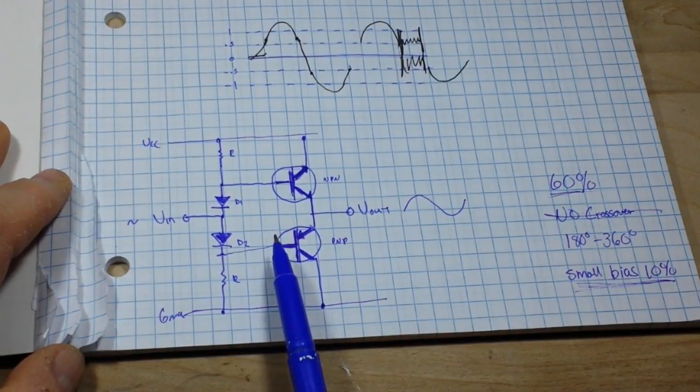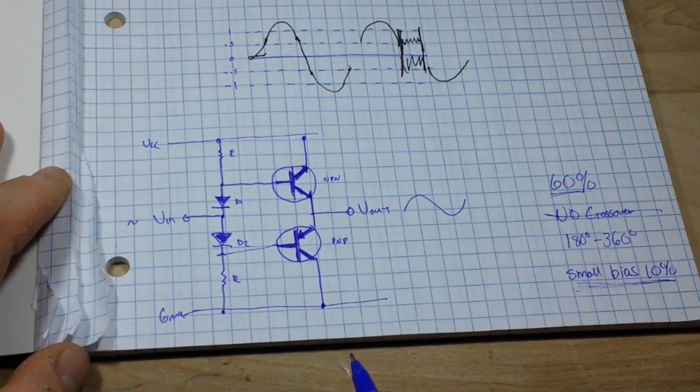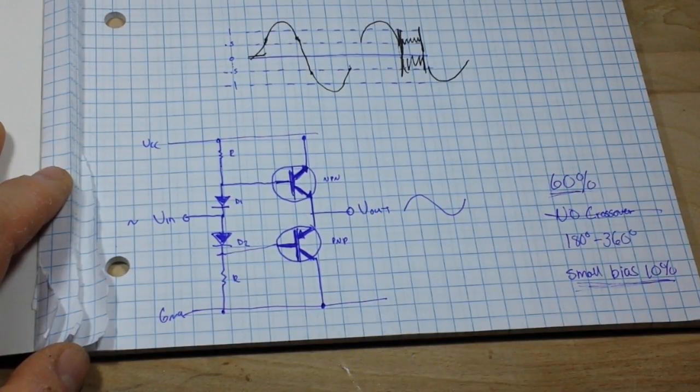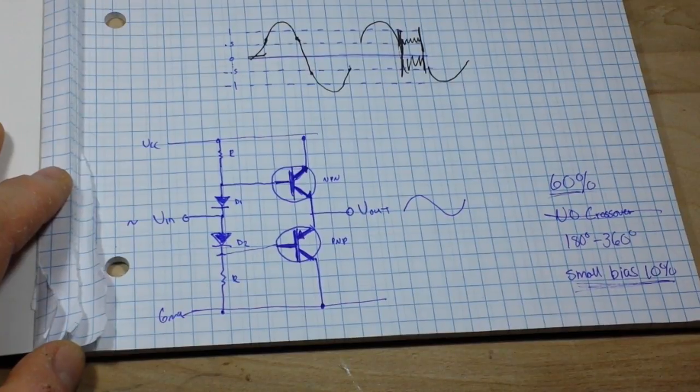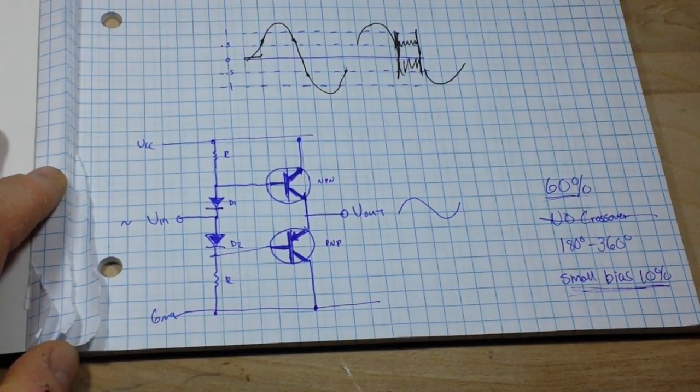The AB gives you the benefits of the A and the B, which, you know, that's why they call it the Class AB amplifier. So that's it for our Class B and our Class AB.